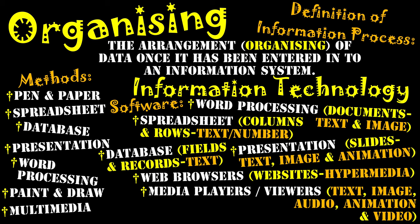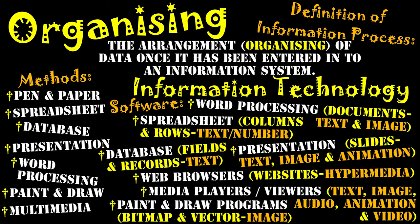We have media players and viewers, which allow us to look at all the different media types depending on the type of media player we're using. For example, using iMovie, you can publish a movie that has text, images, and video attached to it, and it will play in whatever movie browser you have on your computer. And finally, we have paint and draw programs, which allow us to enter bitmap and vector graphics into the system, which are used to represent images.